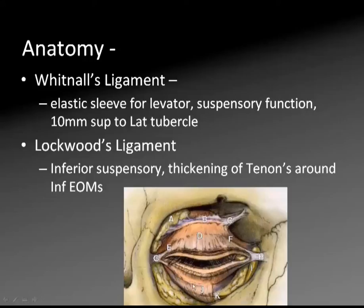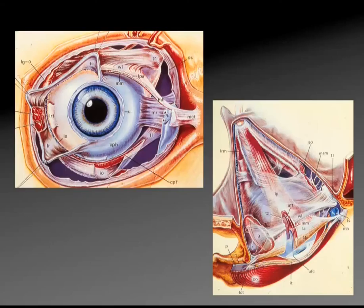Lockwood's ligament is the inferior suspensory ligament, and it is just a thickening of Tenon's around the inferior extraocular muscles. Here is another nice picture depicting Whitnall's ligament and your inferior suspensory ligaments.